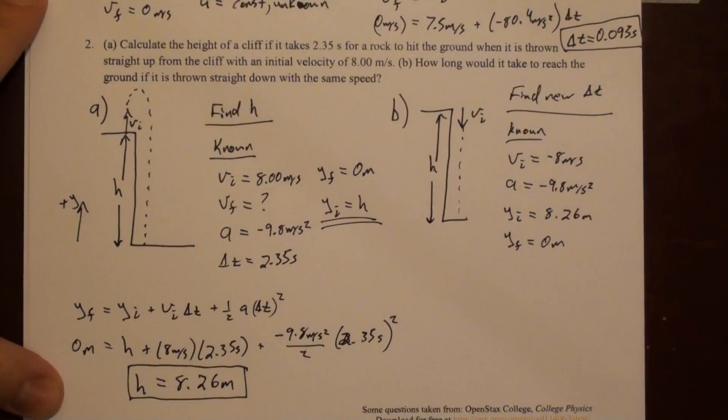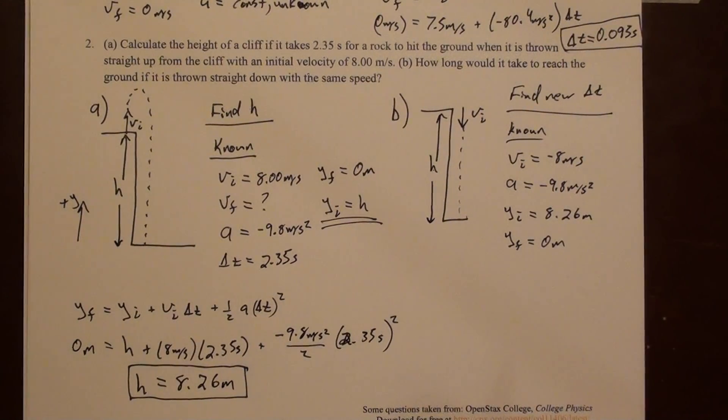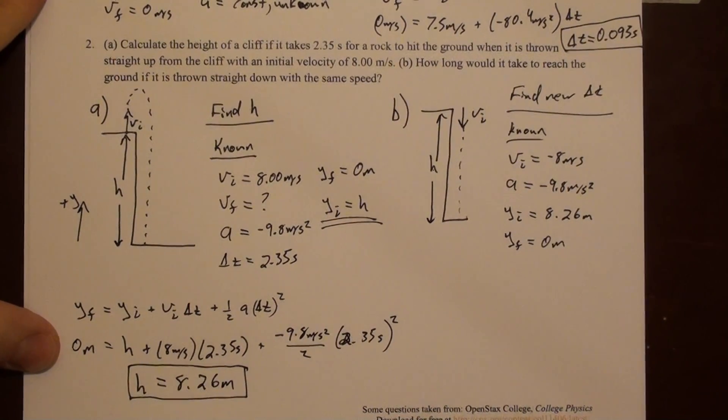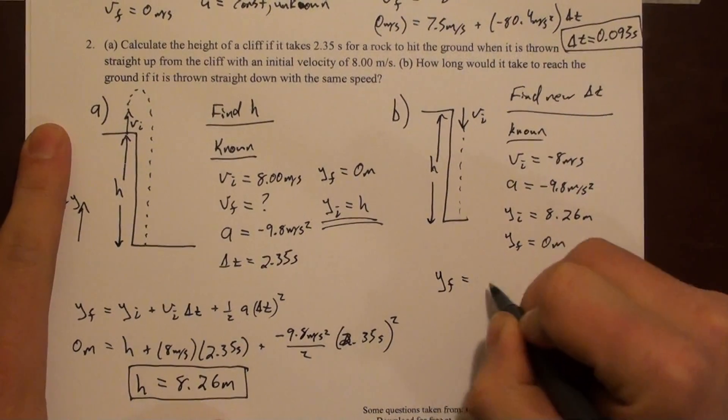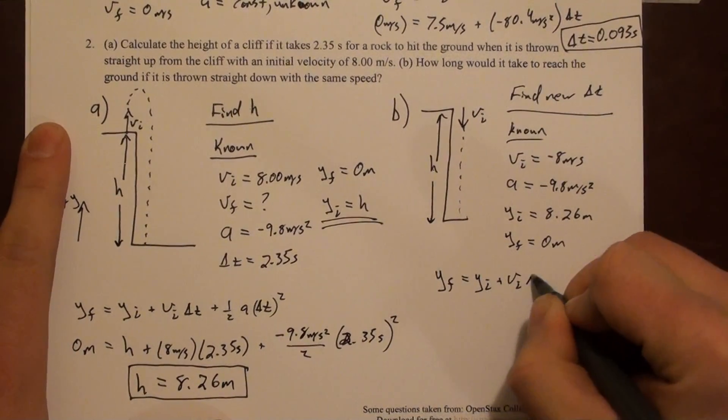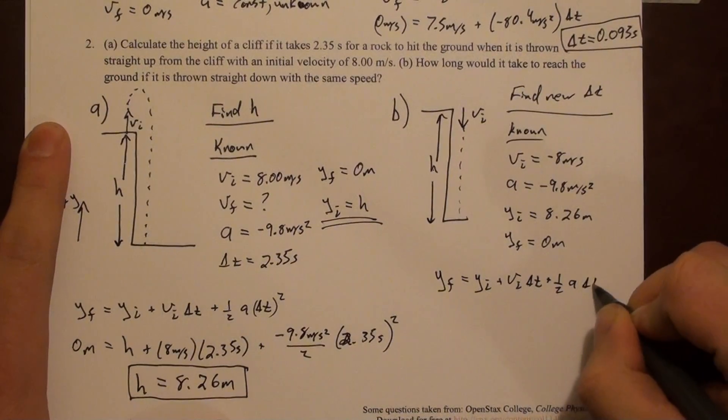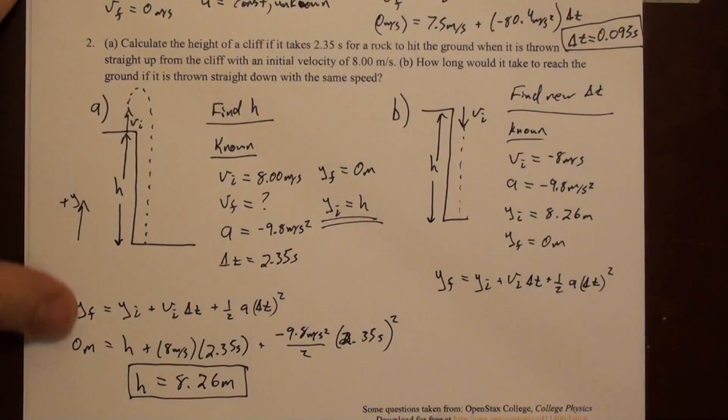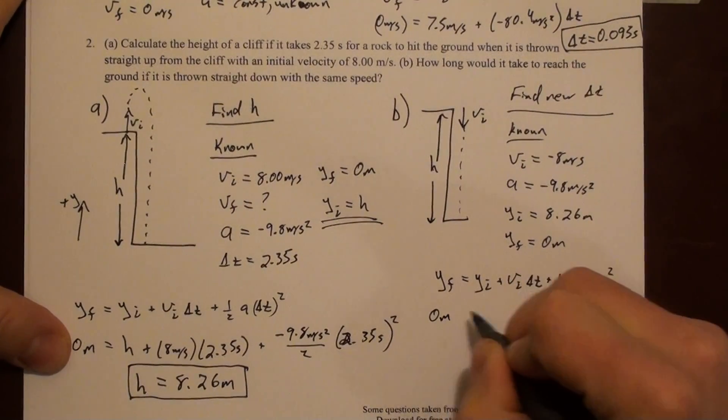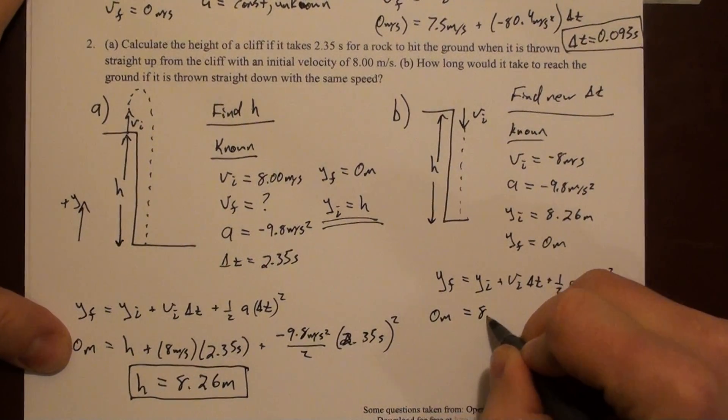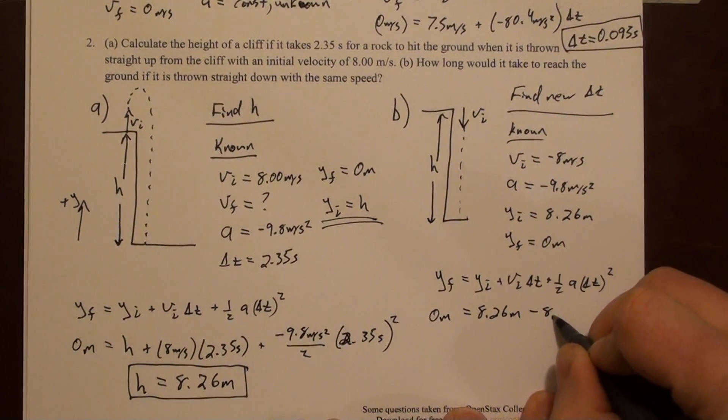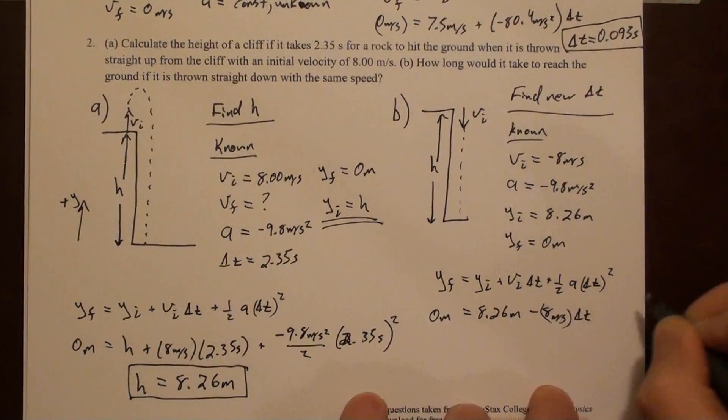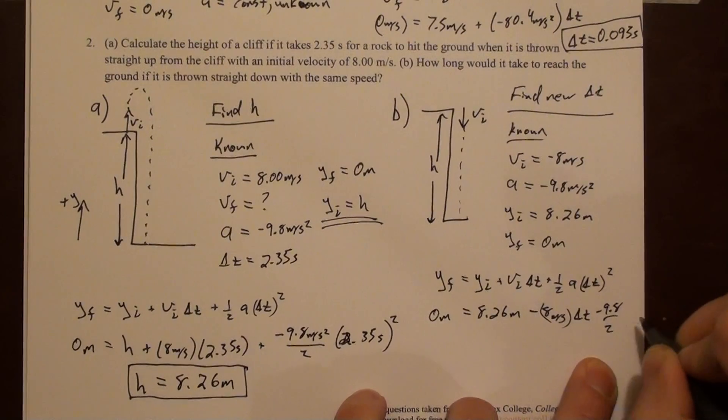So we can put these together and find this new delta t. Again, we don't know v final, so we're gonna ignore two of the equations. They have, both have a v final in them. But it looks like we could use the other equation, the one that does not have v final in it. So if we fill that out, we've got y final equals y initial plus v initial delta t plus 1 half a delta t squared. We can put numbers in for this. That's 0 meters equals 8.26 meters minus 8 meters per second times delta t minus 9.8 over 2 times delta t squared.